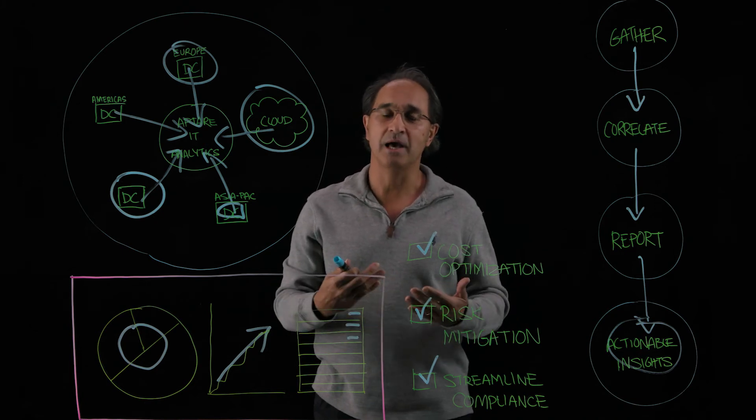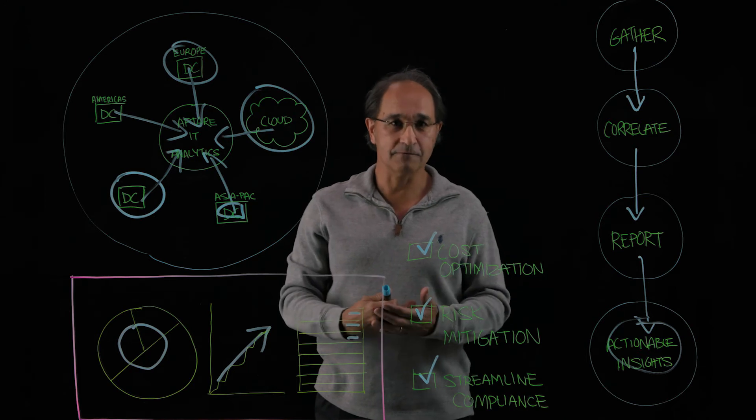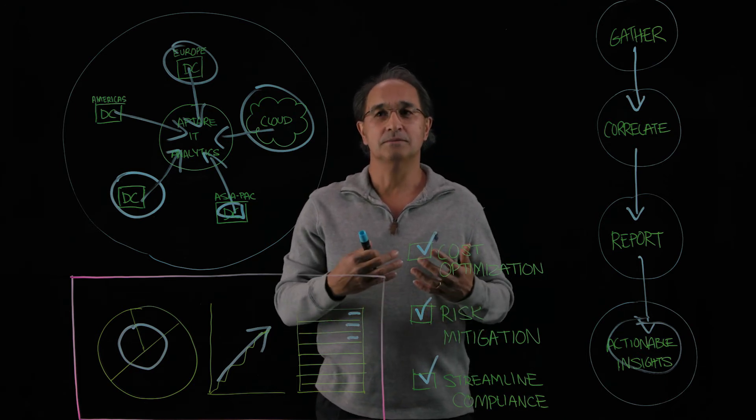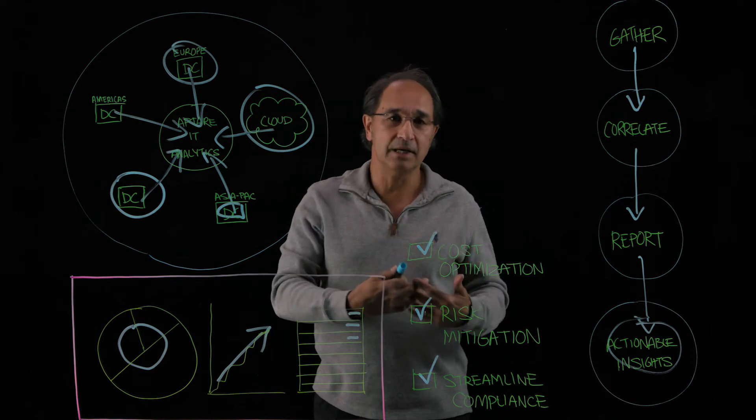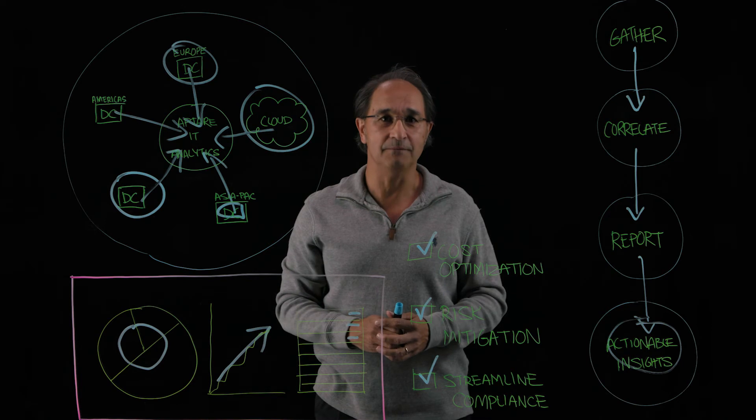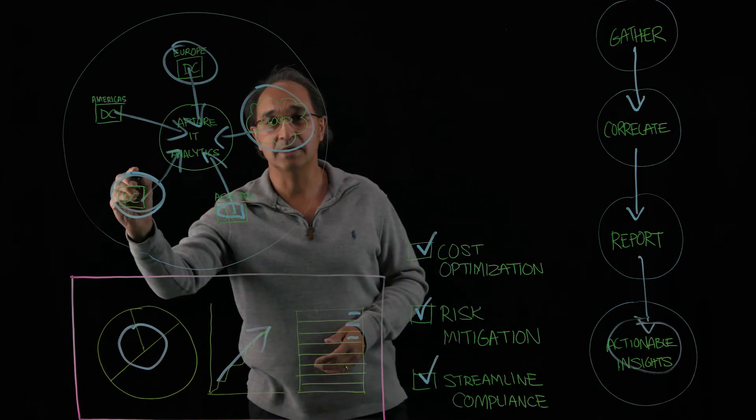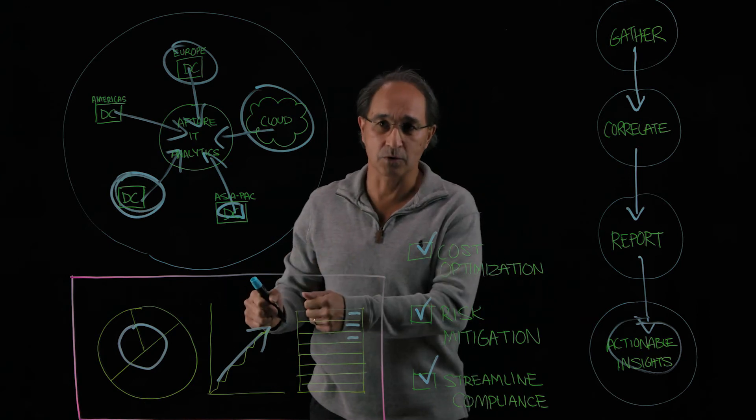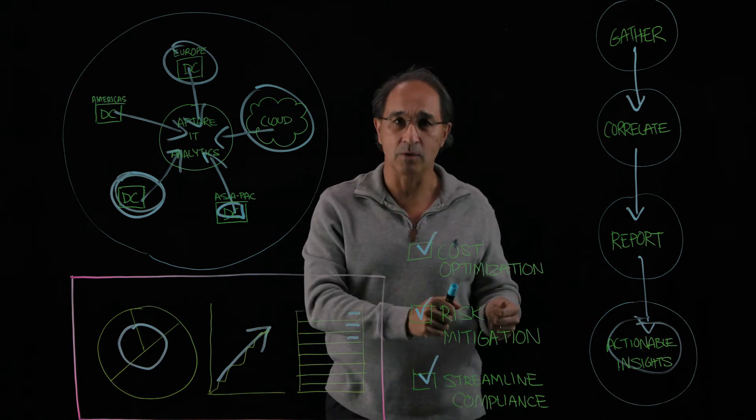A great example is we had a large accounting firm here in America who was looking to mitigate some risk in terms of an application performance problem that they had. They automatically thought the data center team said application performance problem must be storage, or it must be the network.